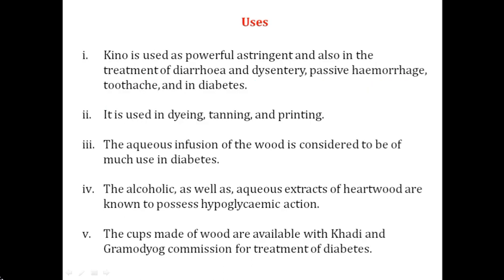Next is usage. Kinoin belongs to the tannins category. All tannins are powerful astringents — they cause precipitation of protein over the surface. Therefore, kinoin is used as a powerful astringent. It is also used in the treatment of diarrhea, dysentery, passive hemorrhage, toothache, and diabetes. This pterocarpus drug is very famous for diabetes. The pterocarpus drug is available as glass cups, and using them gives better and magical results in cases of diabetes complications.